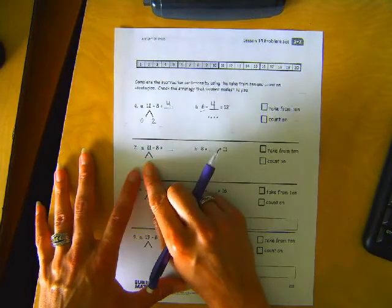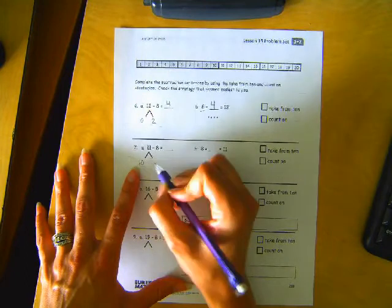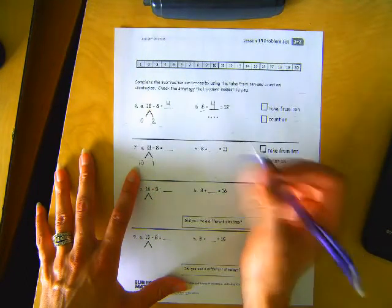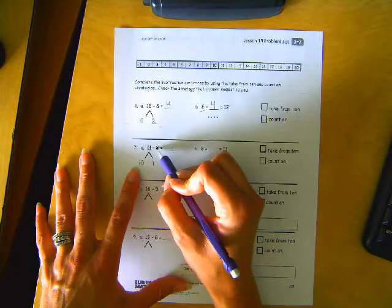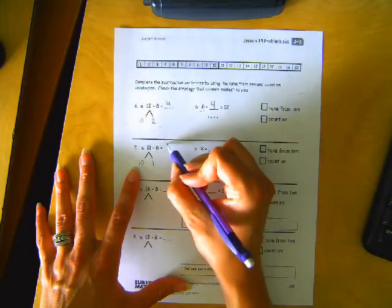Let's look at 7. We need to break the 11 into a 10 and one more. We did, we took the 8 from 10, that would leave us with 2 and the 1. 2 and 1 makes 3.